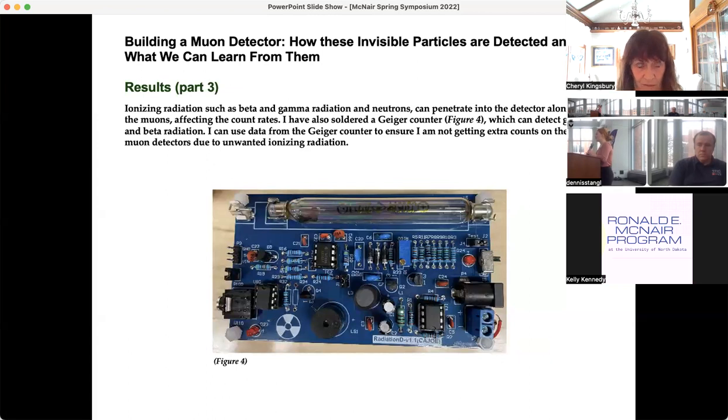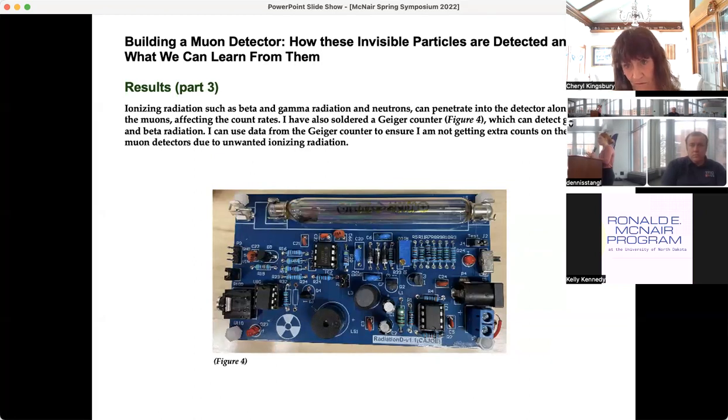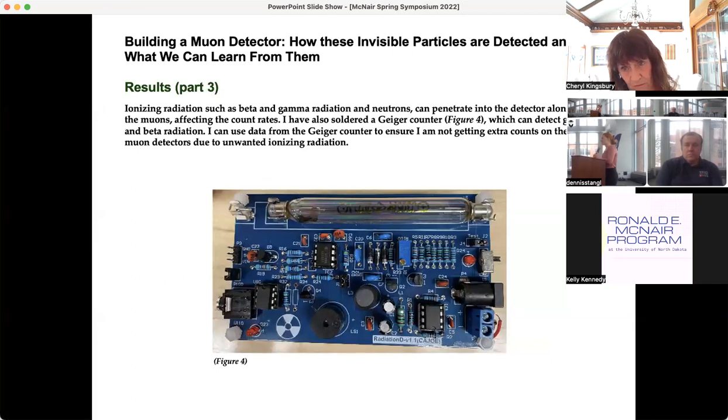Overall, this project is testing Einstein's special theory of relativity. From these predicted values that I have without the special theory of relativity, we'd get almost no muons that would reach us at ground level. But if my predicted high altitude count rates with the length contraction and time dilation match the measured data that I'll get, it will support Einstein's special theory of relativity. And since it is still just a theory, they're always looking for more data and information to support that theory.